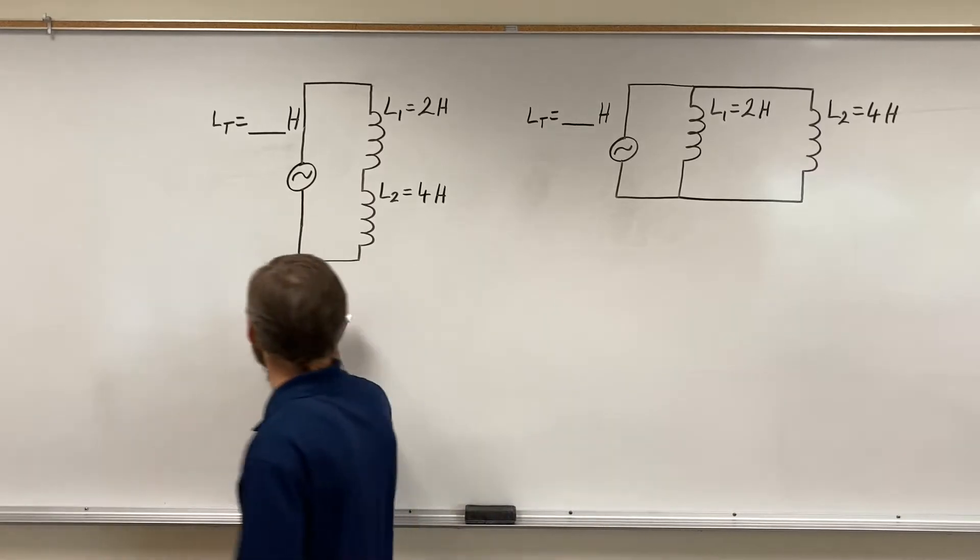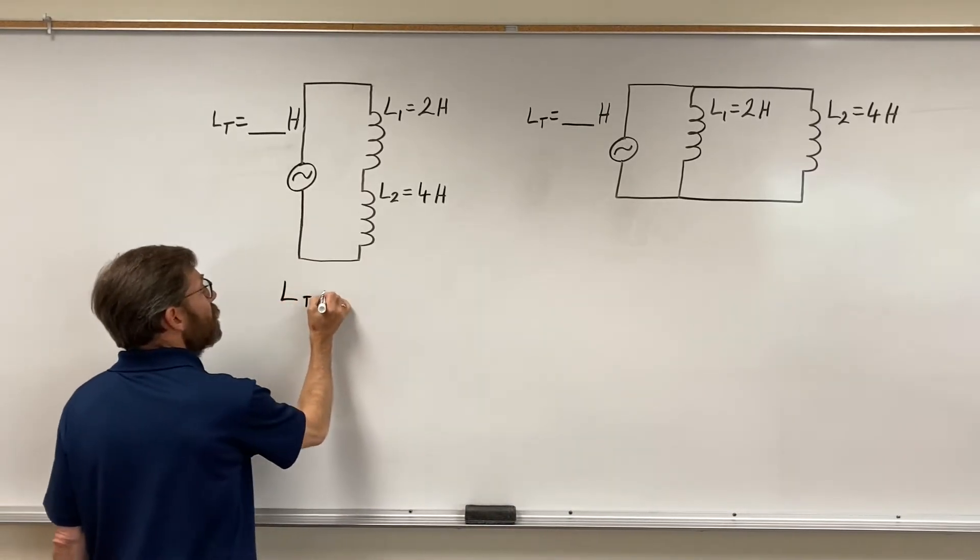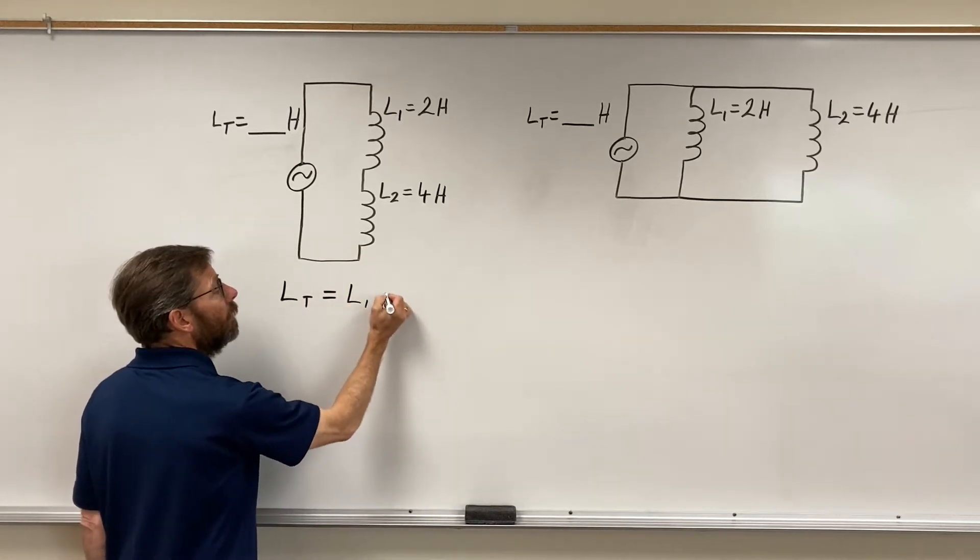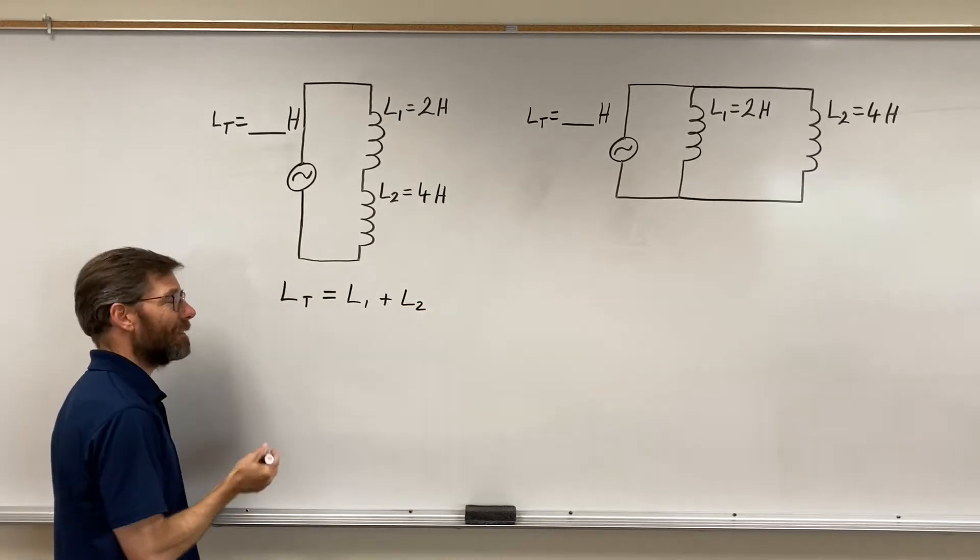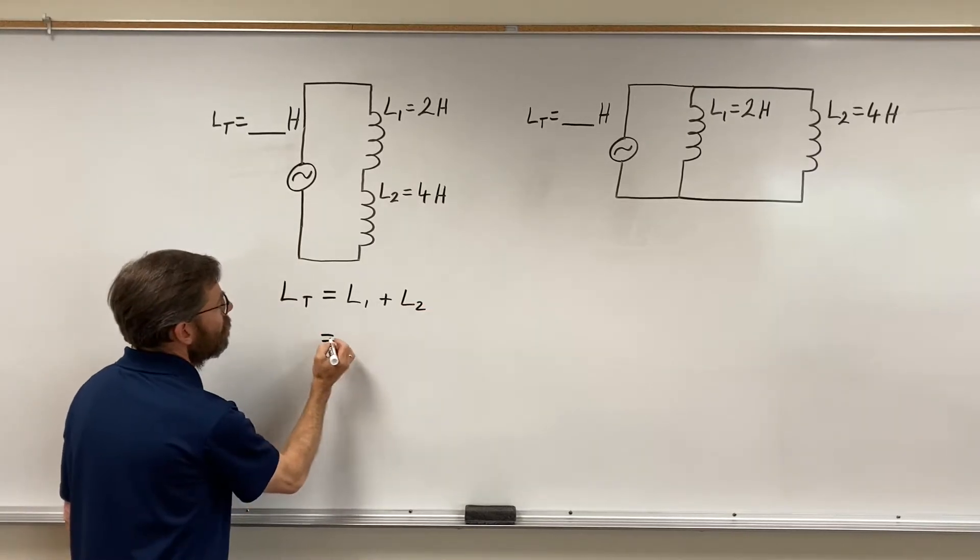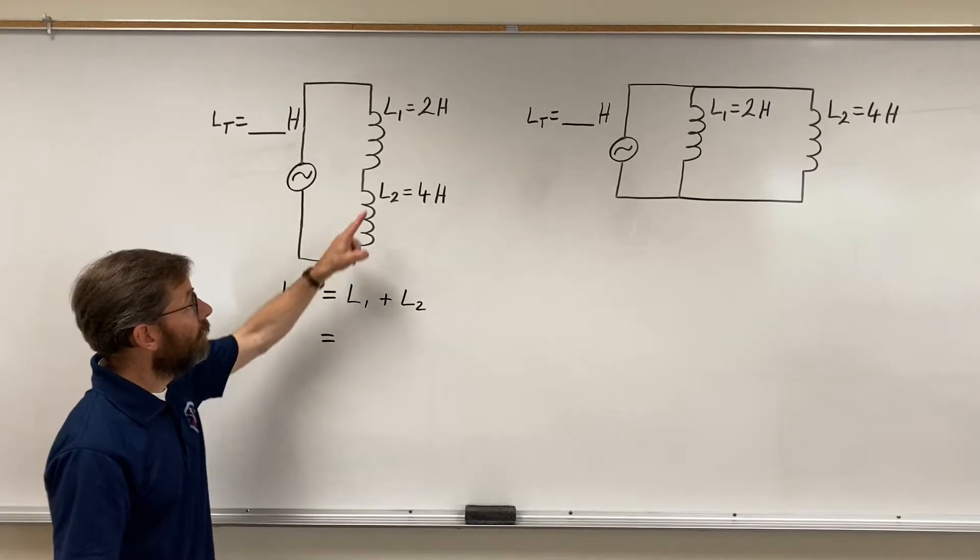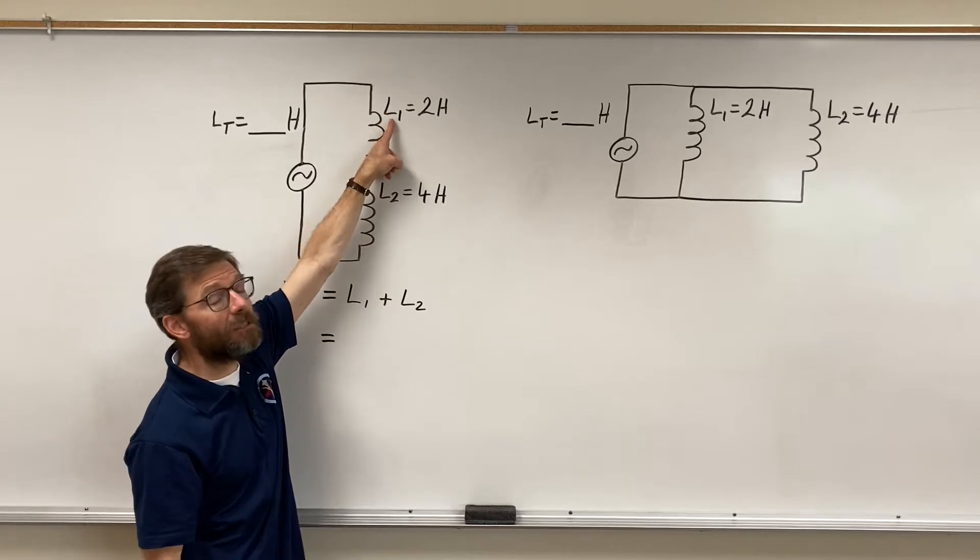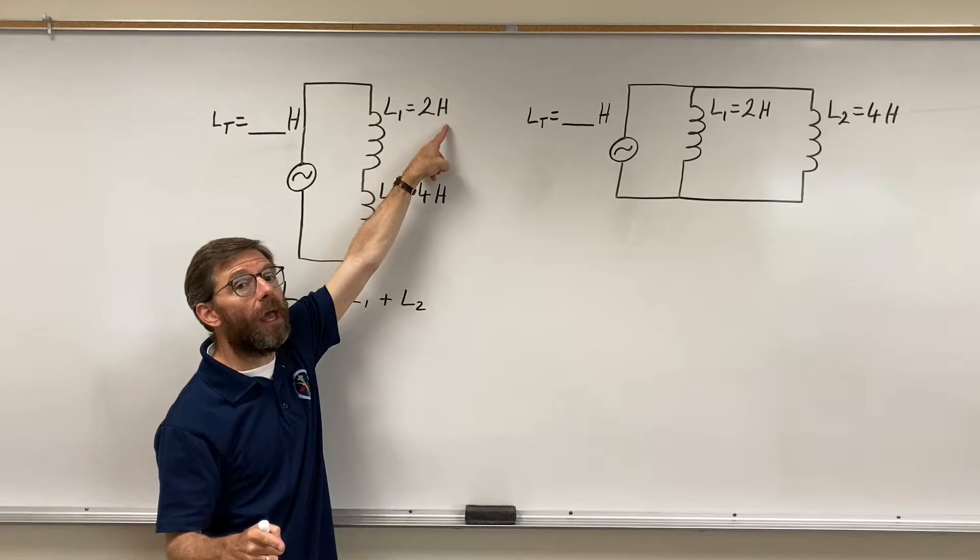Let's take a look. Total inductance will equal inductor 1 plus inductor 2 - their inductances. Now remember, terminology is important. L1, inductor number one, has an inductance L for inductance of two Henry's.